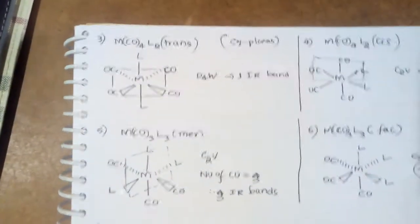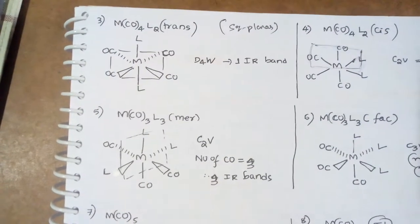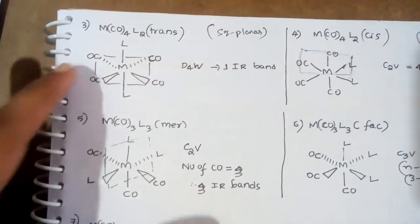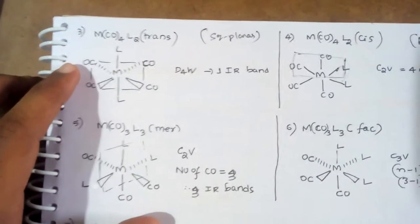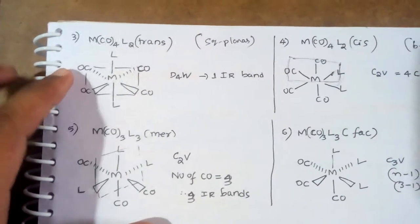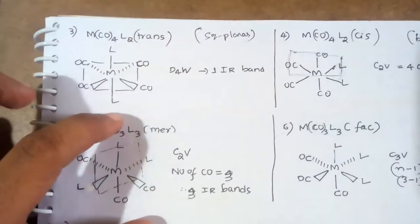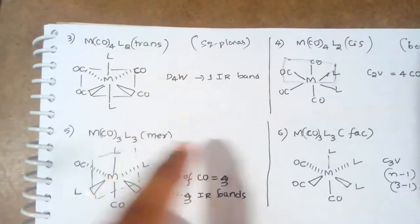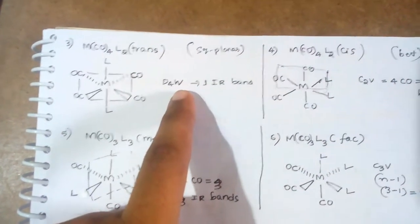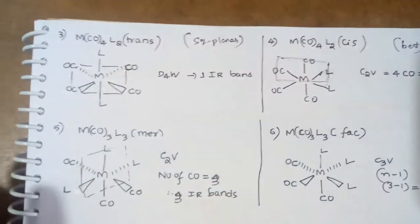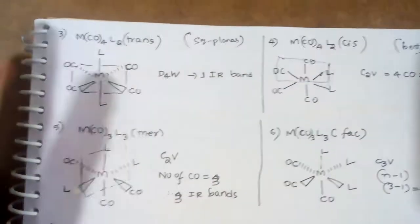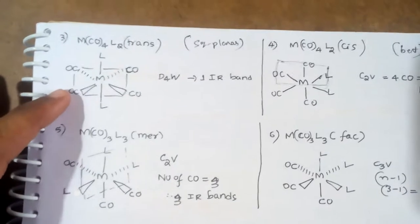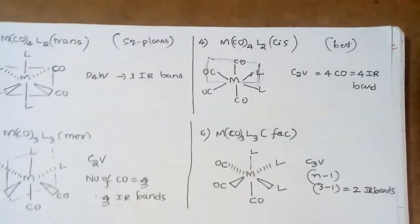For MCO4L2, it's a square planar complex. All four CO groups are in one plane. These two ligands are exactly anti towards each other. D4H means one IR band because all four carbonyl groups are in the same plane.